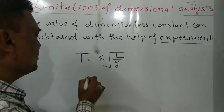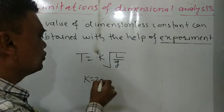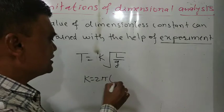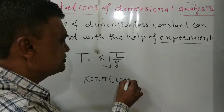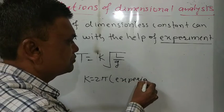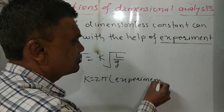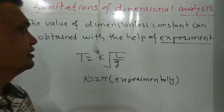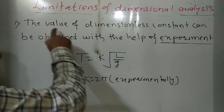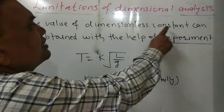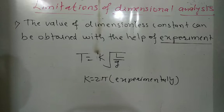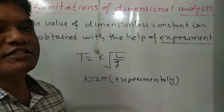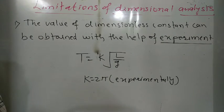We can take the value of K equal to 2π, but only experimentally. So the value of a dimensionless constant can be obtained only with the help of experiment.